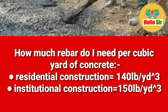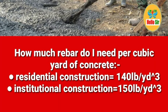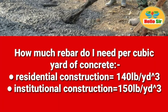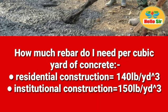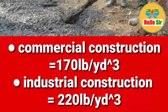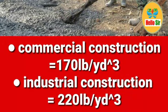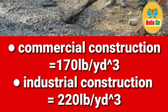In summary, the rebar quantities per cubic yard of concrete are approximately: residential construction — 140 pounds; institutional construction — 150 pounds; and commercial construction — 140 pounds per cubic yard of concrete.